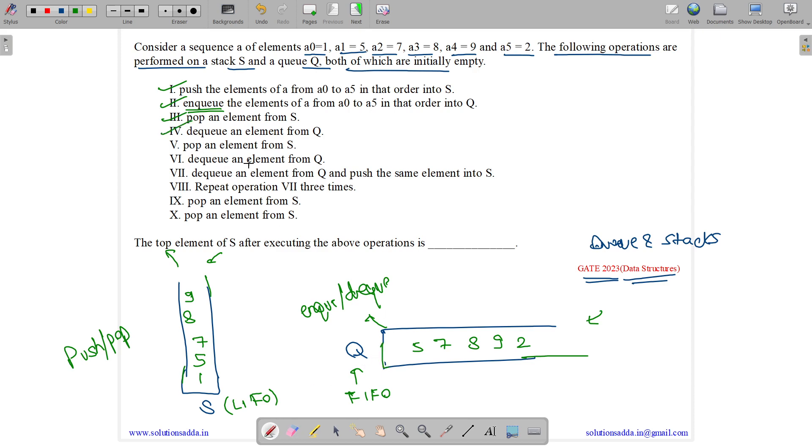Pop an element from S. Again, the top which is 9 will be removed. Then we have dequeue an element from Q which is first item 5 will be removed.